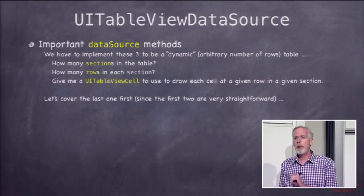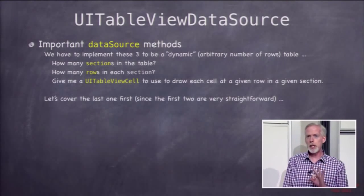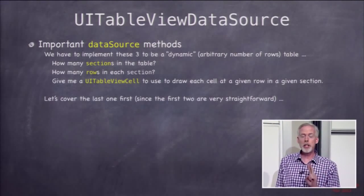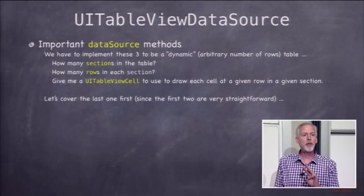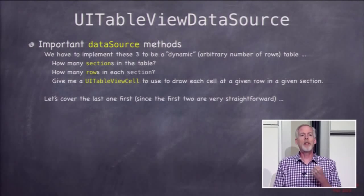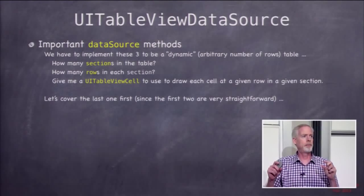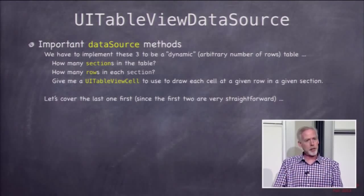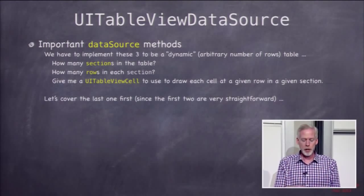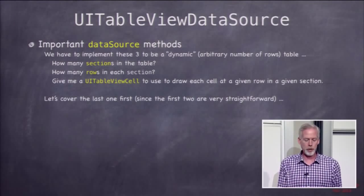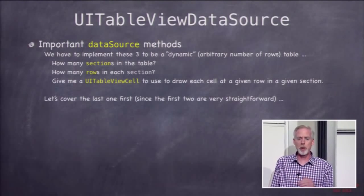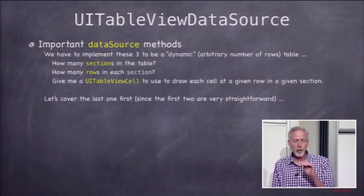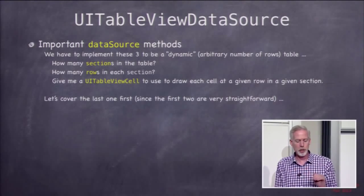What are the important methods in the data source protocol? There are really three important ones: how many sections are in this table, how many rows are in each section, and then give me a UITableViewCell — a view I can use to draw this row. These are the three things. You need to know how much data there is, and then it constantly asks you for the data by asking for this UITableViewCell over and over. Let's cover the last one first, because that's the most important.